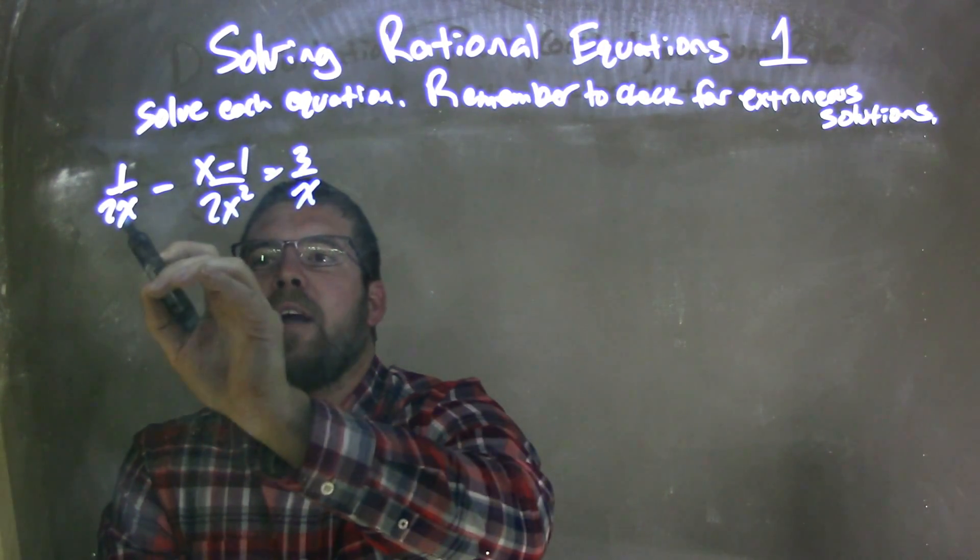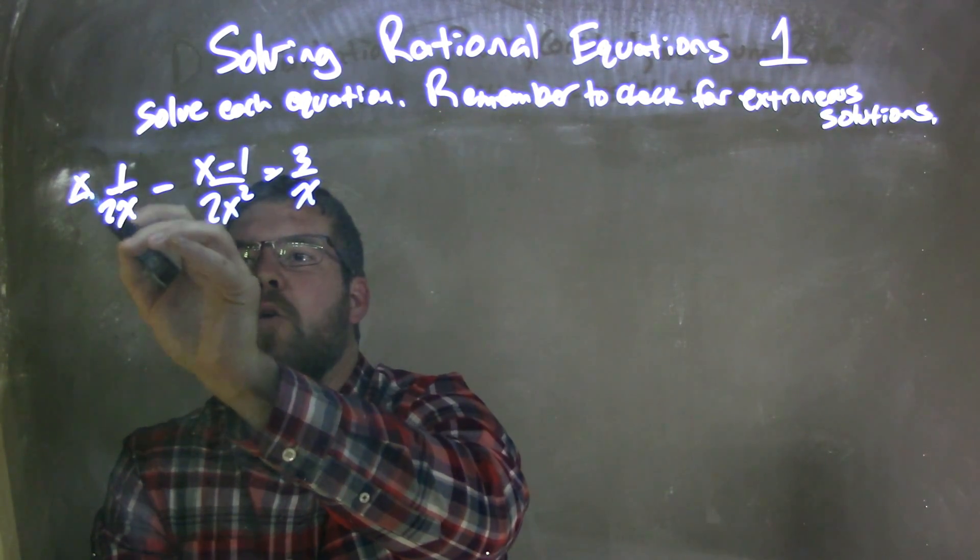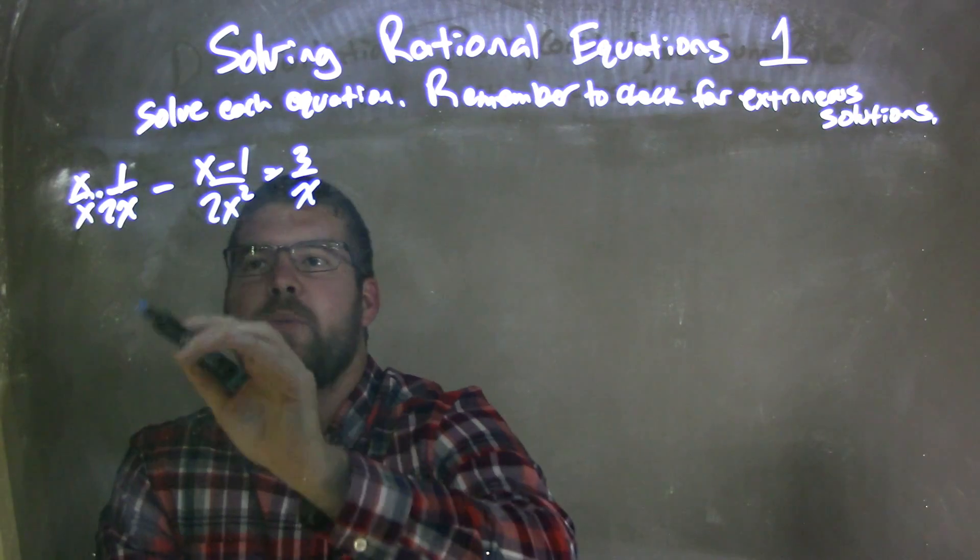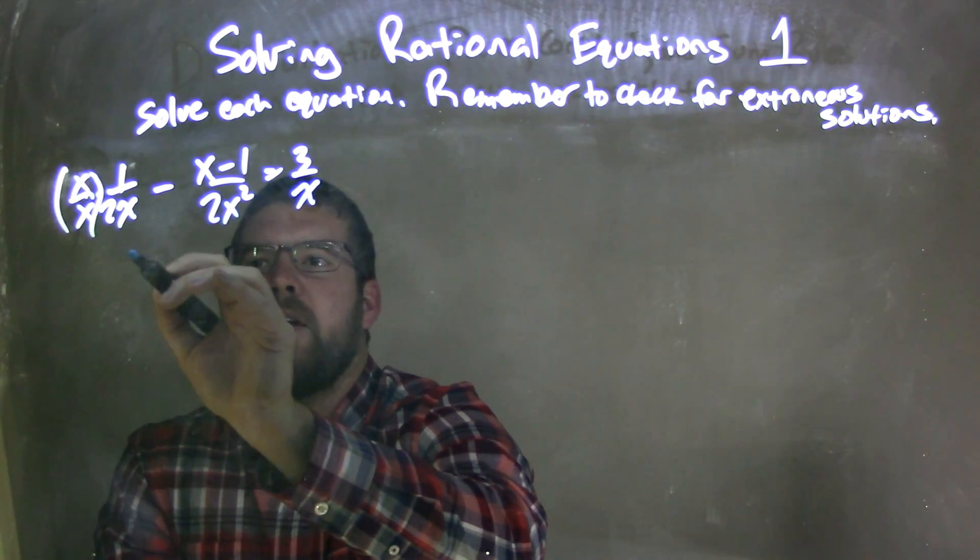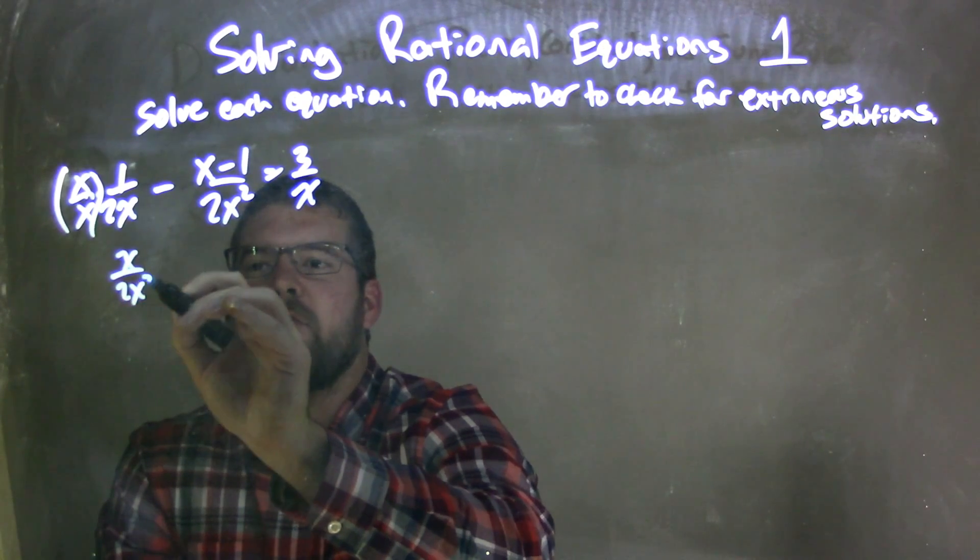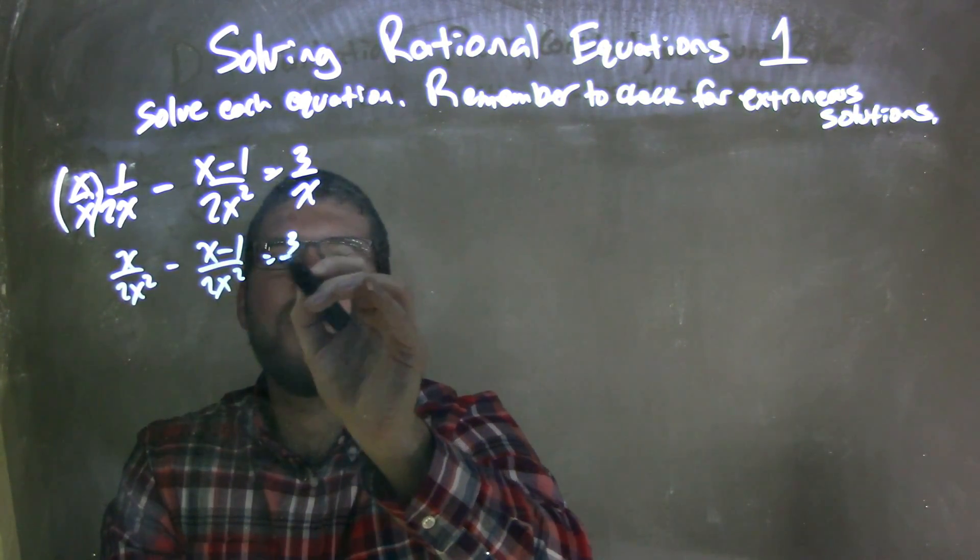What I need to do now is multiply this fraction by x over x. And what that does, when I multiply it out, it gives me the same base. So we have x over 2x squared minus x minus 1 over 2x squared equals 3 over x.